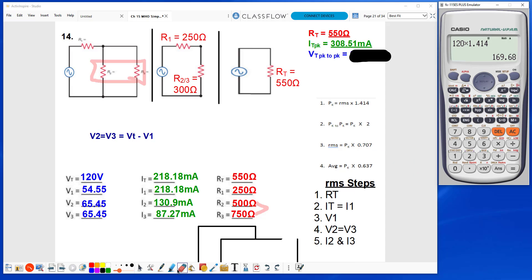I'm going to multiply that times 2 to get my peak to peak voltage. Peak to peak is equal to peak times 2. So I just take the answer, hit times 2 equals, and I see my VT peak to peak value of 339.36 volts.